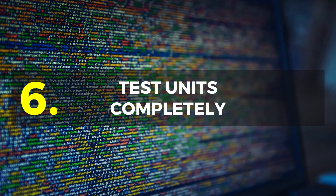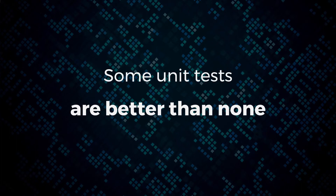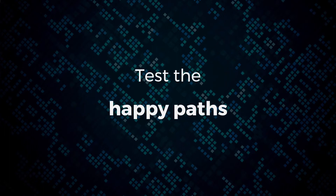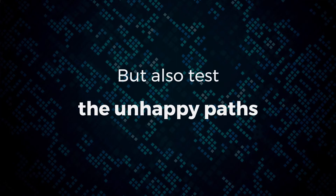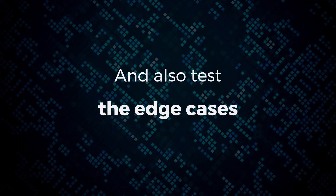Number six: test your units completely. Having some unit tests is obviously better than having none. Aim to have as much coverage as you can — don't aim for 100%, that doesn't matter, but test the right things. Always test the happy paths — the positive results where services succeed. Also test the unhappy paths: what happens when an external service fails or an error is thrown? And test edge cases — like someone passing a number when you expect a string. Write tests for all of those.